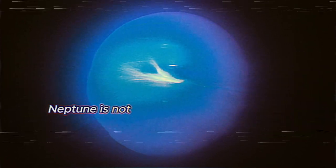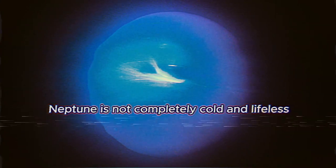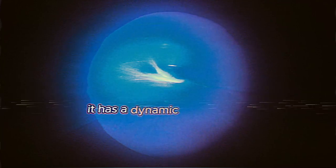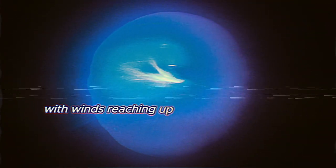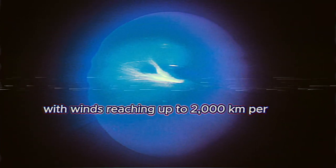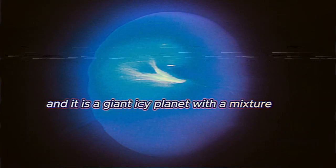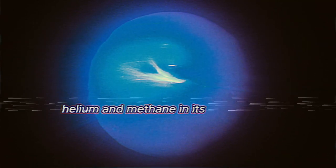Despite its distance from the Sun, Neptune is not completely cold and lifeless. It has a dynamic atmosphere with winds reaching up to 2,000 kilometers per hour, and it is a giant icy planet with a mixture of hydrogen, helium, and methane in its atmosphere.